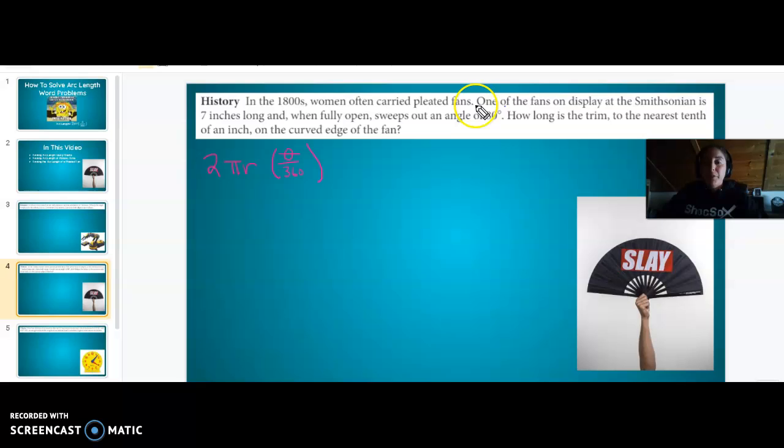In the 1800s, women often carried pleated fans. One of the fans split at the Smithsonian is 7 inches long. In fans, if you can see by this picture here, fans have two sides and there's like a little hinge usually right here. So this is what was 7 inches long. This 7 is going to provide us with our radius.